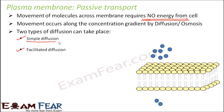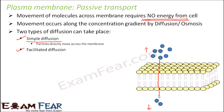Simple diffusion is straightforward: where concentration of particles is higher on one side and lower on the other, particles directly cross the plasma membrane from high to low concentration. That is called simple diffusion — this is what we discussed in the past few slides.